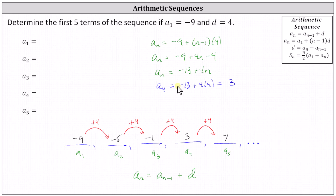So the power of this formula is we can find any term in the arithmetic sequence without knowing the previous term. Either way, we now know the first five terms of the arithmetic sequence are negative nine, negative five, negative one, three, and seven. I hope you found this helpful.